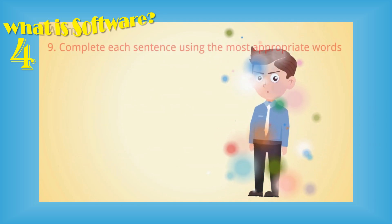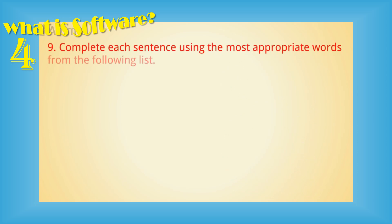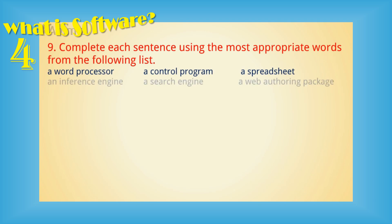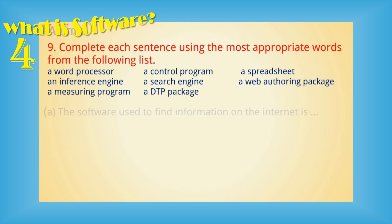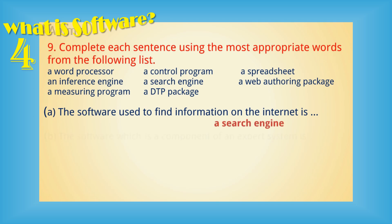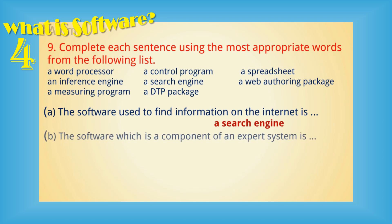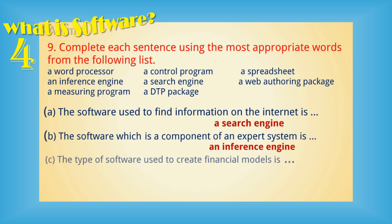Question number nine: complete each sentence using the most appropriate word from the list: a word processor, a control program, a spreadsheet, an inference engine, a search engine, a web authoring package, a measuring program, a DTP package. A) The software used to find information on the internet is — answer: a search engine. B) The software which is a component of an expert system is — answer: an inference engine. C) The type of software used to create financial models is — answer: a spreadsheet.